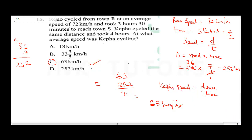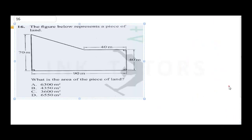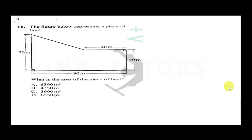The next question is question 16, which says the figure below represents a piece of land. What is the area of the piece of land? The first thing you need to do is recognize that it's made up of a rectangle and a triangle. So we are going to find the area of the rectangle first.